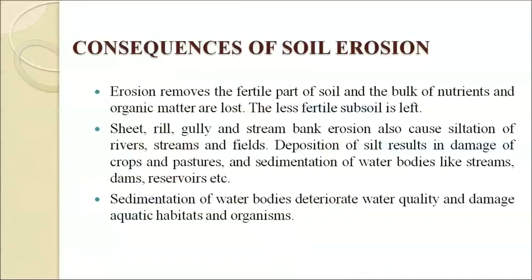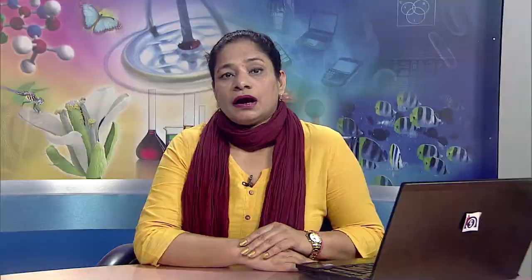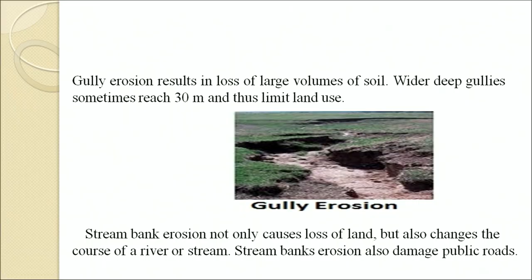Deposition of soil silt results in damage of crops and pasture, and sedimentation of water bodies like streams, dams and reservoirs. Sedimentation of water bodies deteriorates water quality and damages aquatic habitat and organisms. Gully erosion results in loss of large volumes of soil; wider deep gullies sometimes reach 30 meters and thus limit land use. Stream bank erosion not only causes loss of soil and land but also changes the course of the river or stream. Due to erosion, soil becomes bare as seeds or seedlings are removed, making it very vulnerable to further erosion by wind or water.